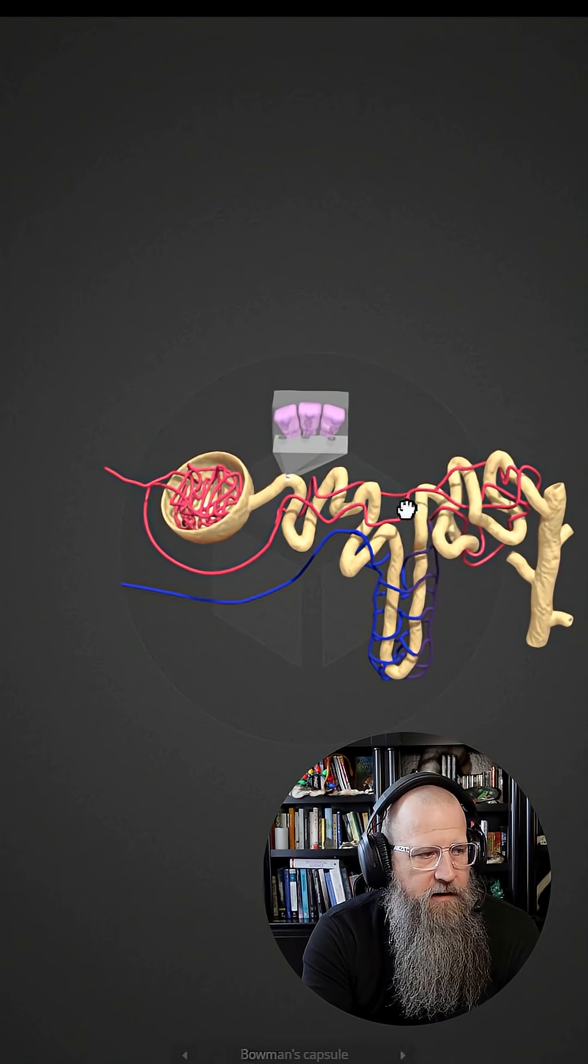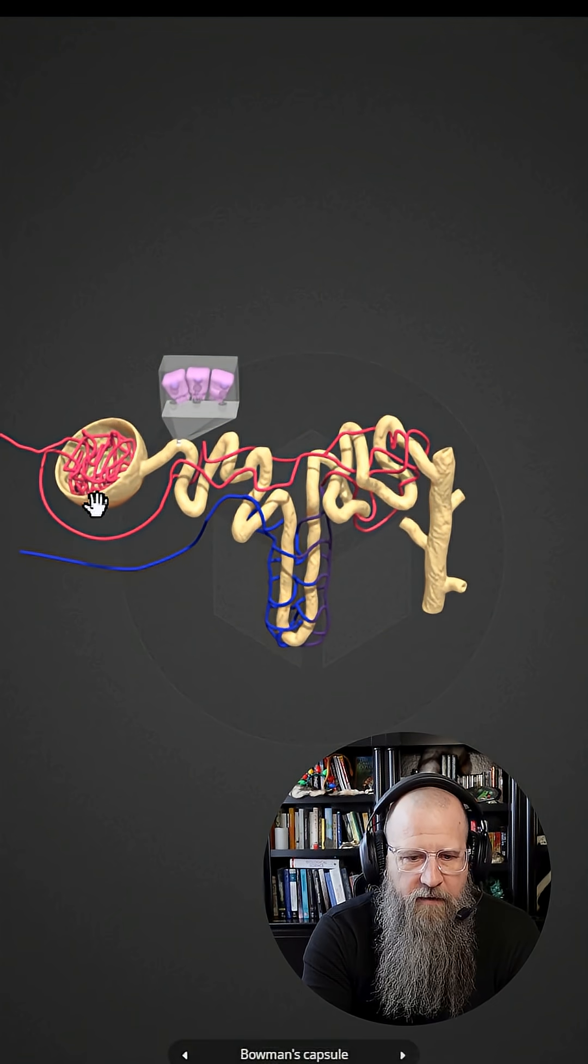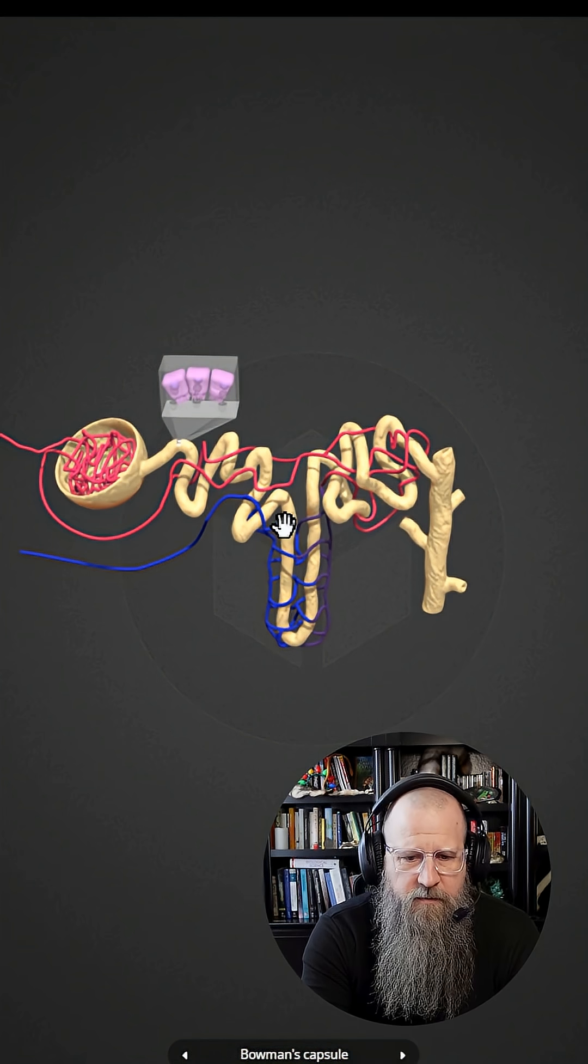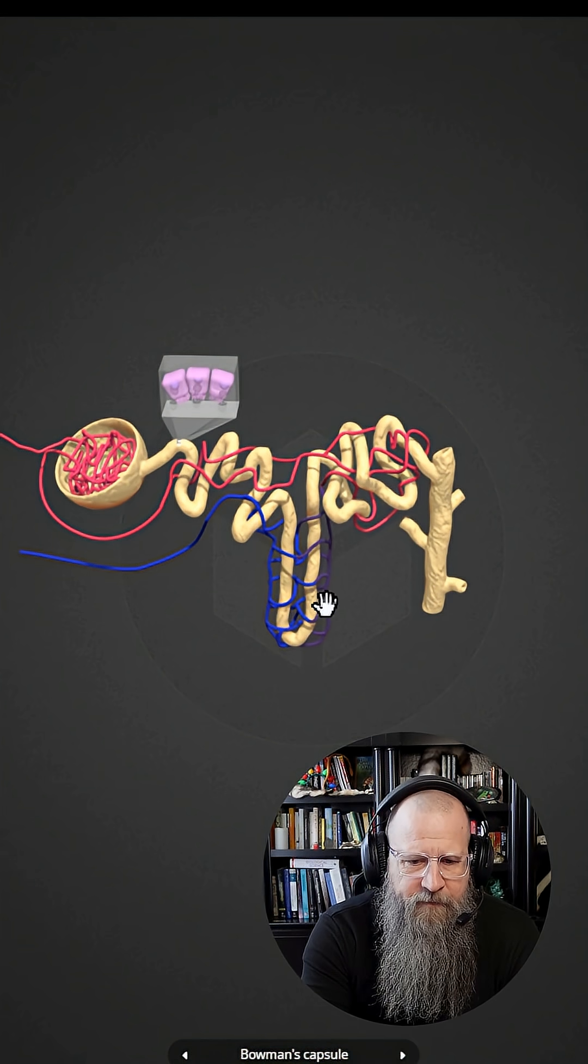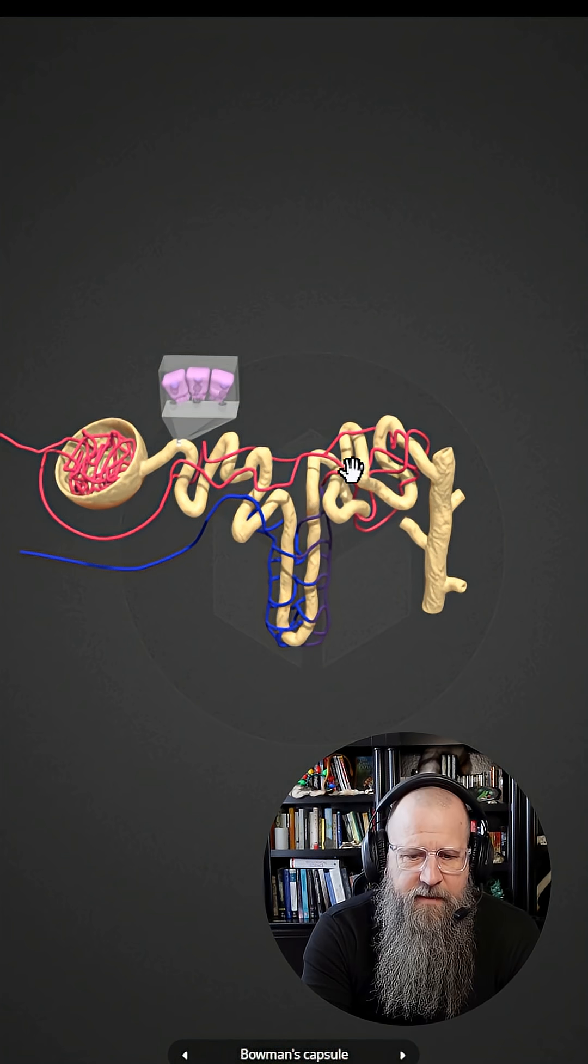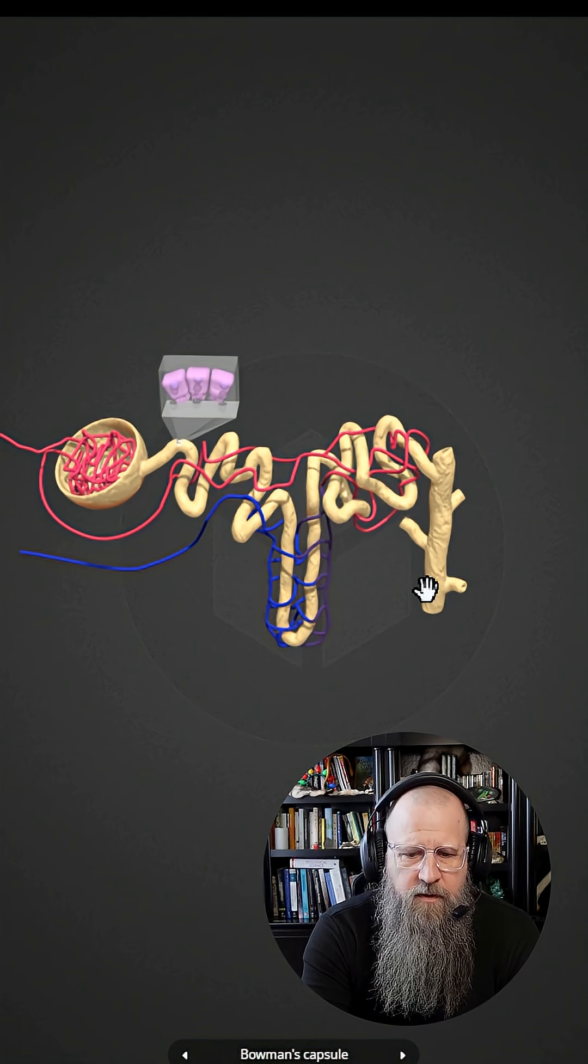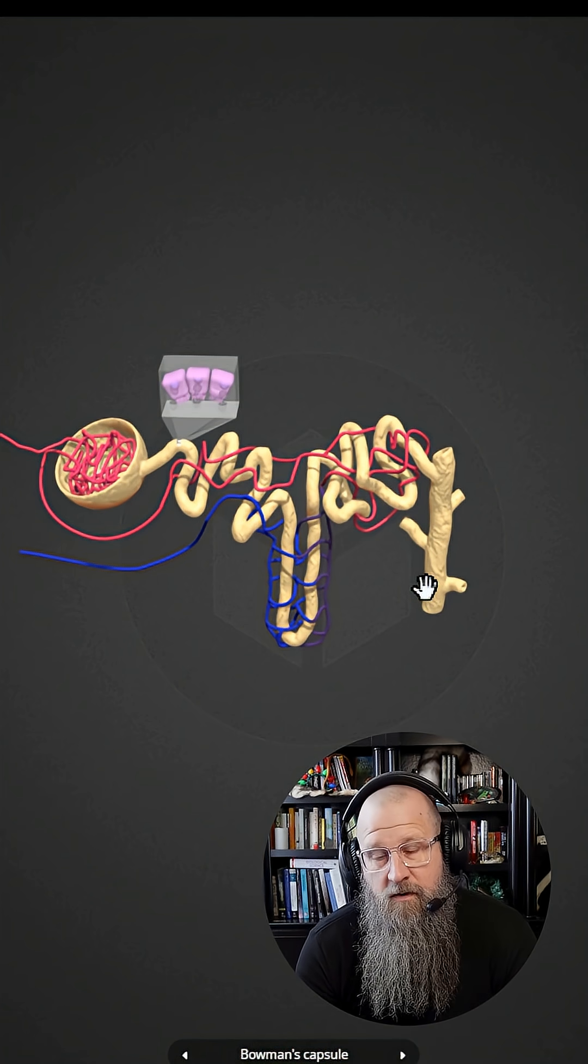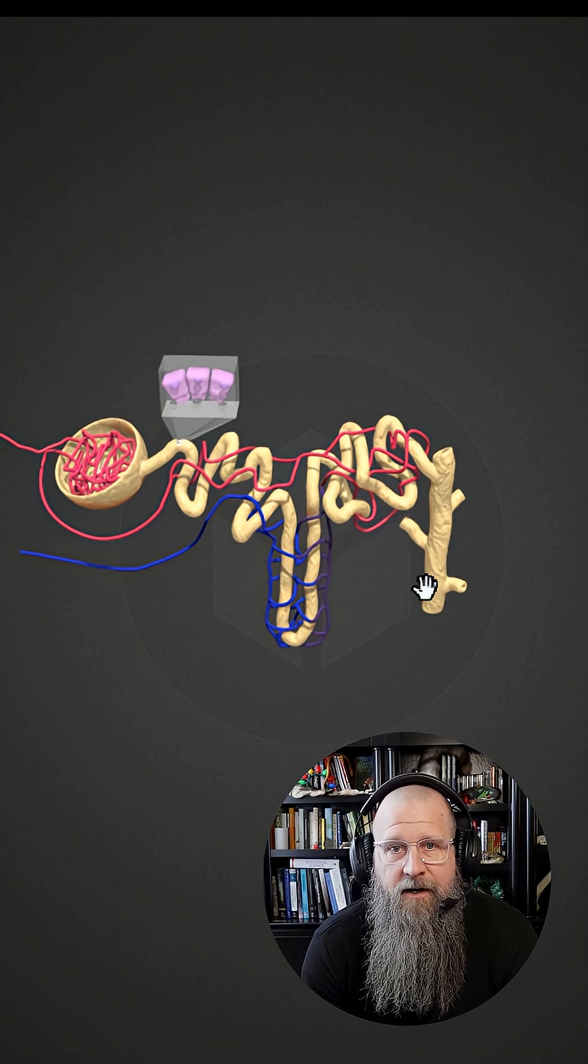if we sort of zoom out here, what we can see is that you have Bowman's capsule, the proximal convoluted tubule, descending limb, loop of Henle or nephron loop, ascending limb, distal convoluted tubule, and then the collecting duct. And those are the parts of the nephron. Now you know. Later.